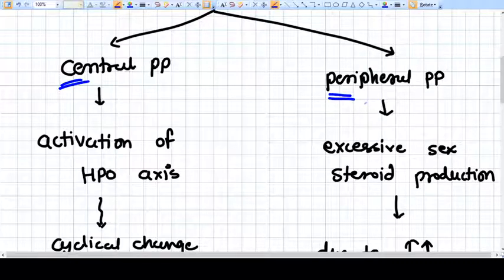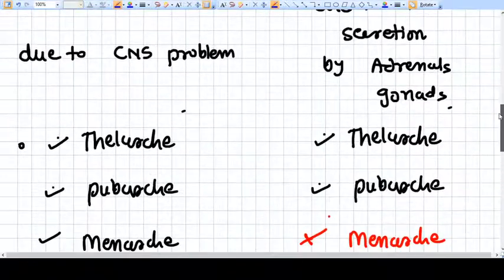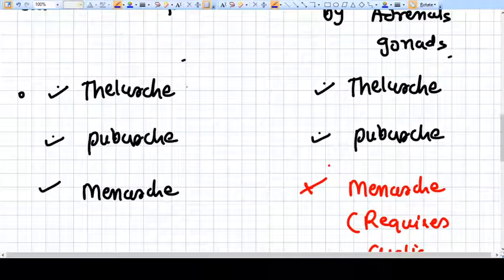In central precocious puberty you will find thelarche is present, pubarche is present, and menarche is also present.